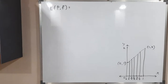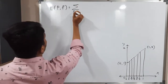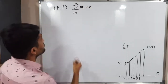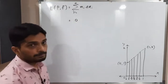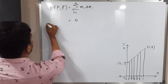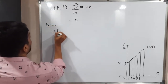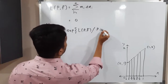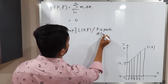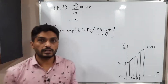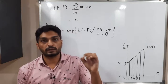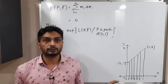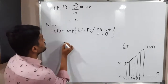Now let us find L(P,f). The formula is L(P,f) = Σ (i=1 to n) m_i · Δx_i. Since m_i = 0, this equals 0 times anything = 0. The lower integral L(f) = supremum of L(P,f) over all partitions. Since L(P,f) = 0 for any partition, its supremum is also 0.